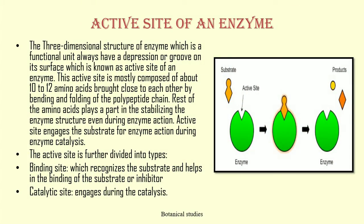Active site of an enzyme. The three-dimensional structure of an enzyme, which is a functional unit, always has a depression or groove on its surface which is known as the active site. This active site is mostly composed of about 10 to 12 amino acids brought close to each other by bending and folding of the polypeptide chain. The rest of the amino acids play a part in stabilizing the enzyme structure even during enzyme action. Active sites engage the substrate for enzyme action during enzyme catalysis. The active site is further divided into two types: binding site and catalytic site. The binding site recognizes the substrate and helps in the binding of the substrate or inhibitor, while the catalytic site engages during catalysis.